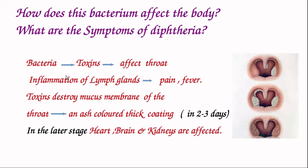So this shows how the bacterium affects the person. Bacteria produces toxins, it affects the throat and causes inflammation of the lymph glands of the throat, and as a result there will be pain and fever. The toxins also destroy the mucous membrane of the throat, and within two to three days there is an ash-colored thick coating formed in the throat. In the later stages, it affects the internal vital organs like heart, brain, and kidneys.